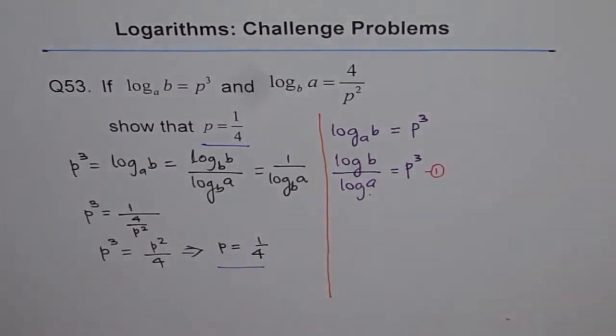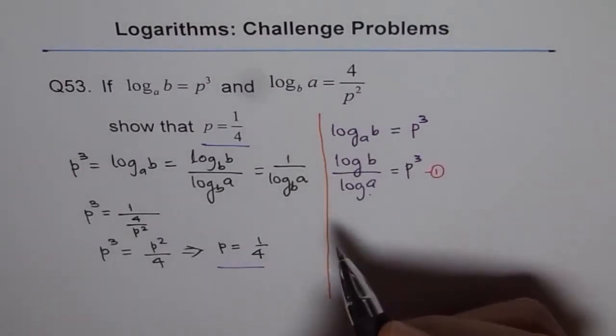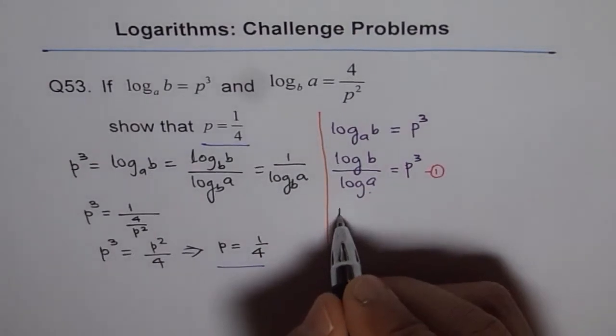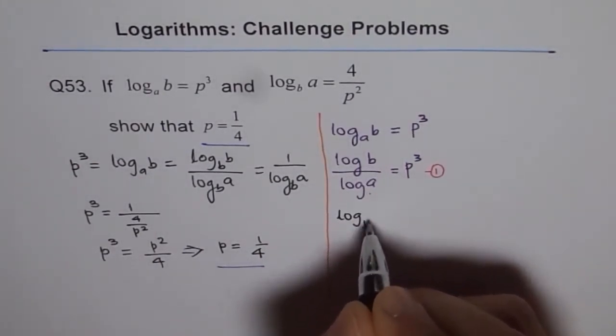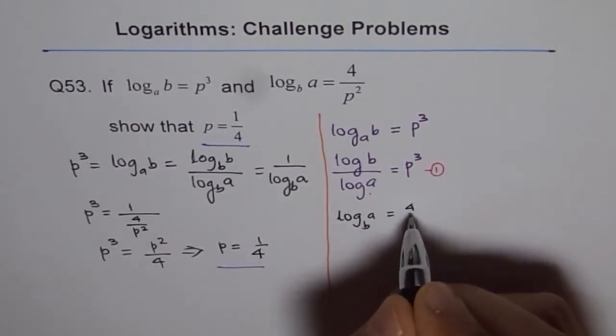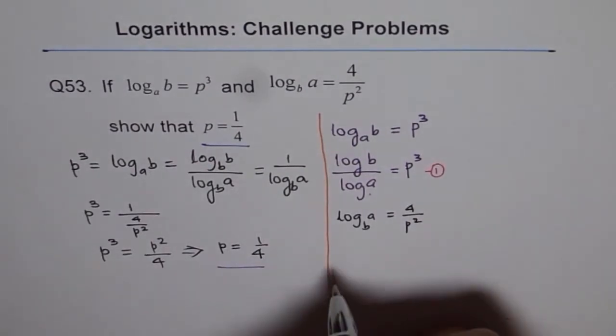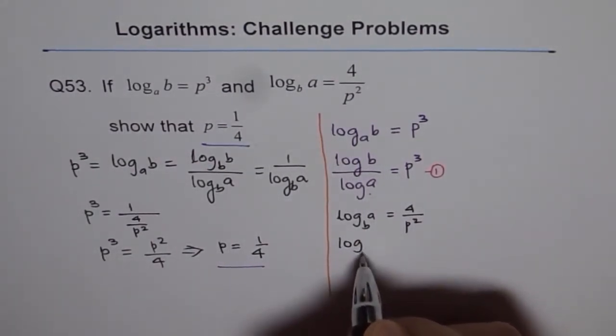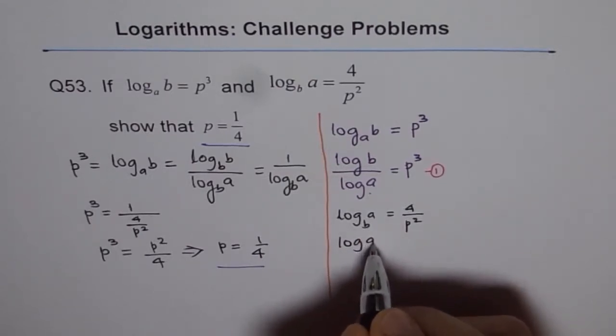Now I will do the same thing for the other given equation, which is log B of A is given to us as 4 over P squared. So I will change this base to 10 and then we get log to the base 10 of A divided by log to the base 10 of B equals 4 over P squared.